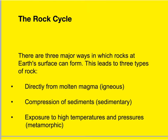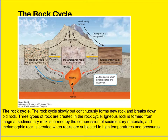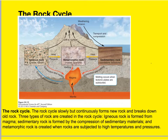There are three major ways that rock on Earth's surface can form, leading to three types of rock. Directly from molten magma, we call that igneous rock. Compression of sediments together, we call that sedimentary rock. And exposure to high temperatures and pressures, we call that metamorphic rock. The rock cycle is slow but continuous — it forms new rock and breaks down old rock consistently. Igneous is formed from magma, sedimentary from the compression of sediments, and metamorphic from when rocks are subjected to high pressures and temperatures.